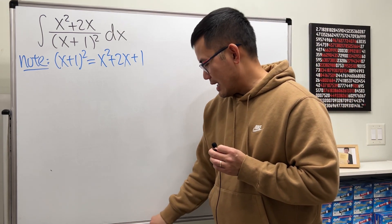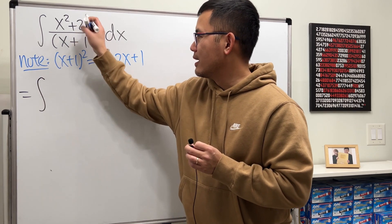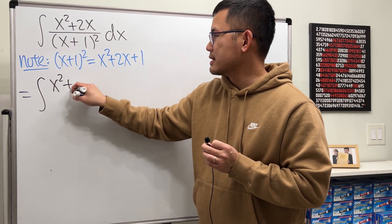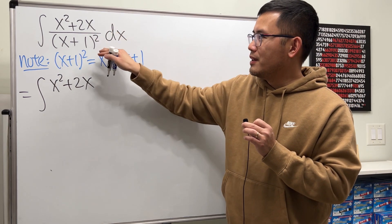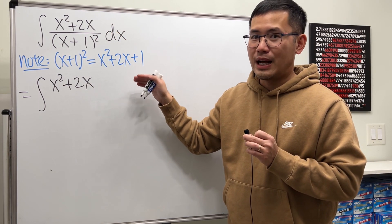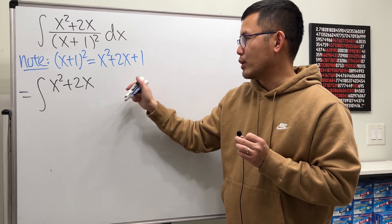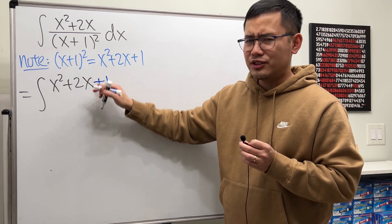Right here, I'm just going to say this is equal to x squared plus 2x. And I really want the numerator to be like that. How do we do it? Just go ahead and add one to it. But that changed the whole thing.